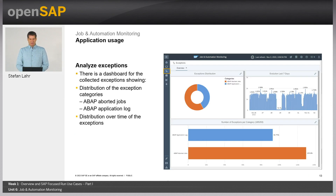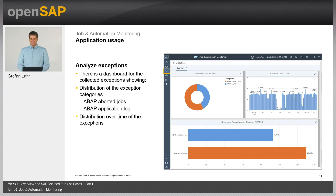We also have an analyze exceptions page, where it is possible to see the distribution of exceptions by category — for ABAP aborted jobs as well as for ABAP application log — and the distribution over time for these exceptions, so you can also see historical behavior.